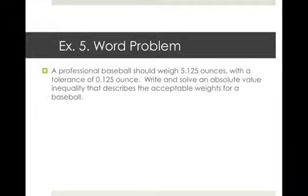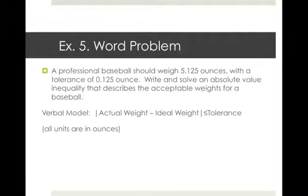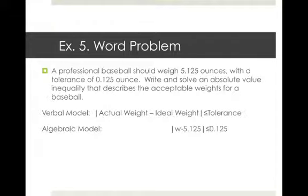Example 5 is a word problem. A professional baseball should weigh 5.125 ounces with a tolerance of 0.125 ounce. Write and solve an absolute value inequality that describes the acceptable weights for a baseball. The verbal model is that the absolute value of the actual weight minus the ideal weight should be less than or equal to the tolerance. So using W for actual weight, we get absolute value of (W minus 5.125) less than or equal to 0.125, meaning the actual and ideal weight can differ by at most 0.125 ounce.